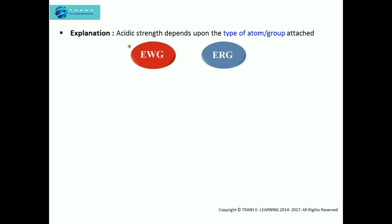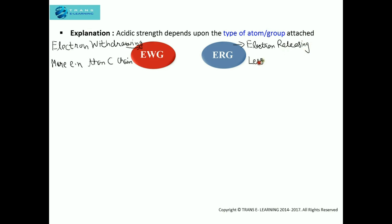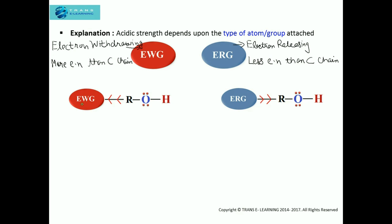There are two types of groups. EWG stands for electron withdrawing group, and this group or atom is always more electronegative than the carbon chain. ERG stands for electron releasing group, and this group is always less electronegative than the carbon chain. The electron withdrawing group is attached to the carbon chain, and as this group is more electronegative compared to the carbon chain, it will withdraw the electrons towards itself, and this will lead to the minus I effect.